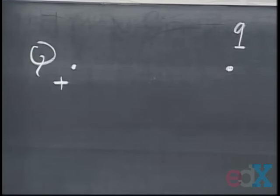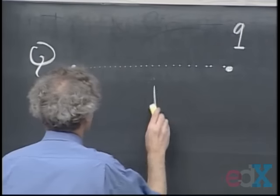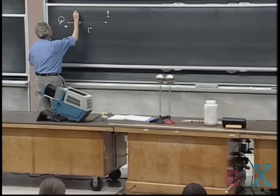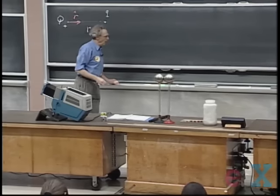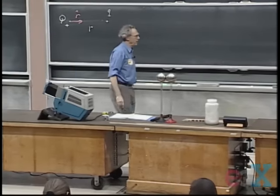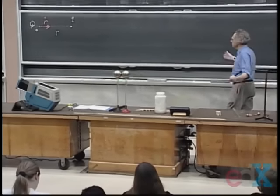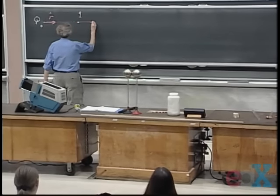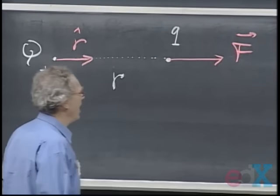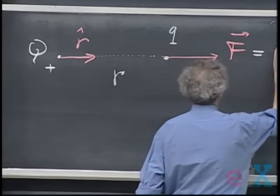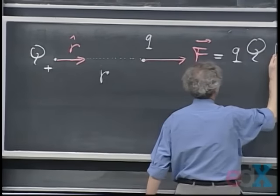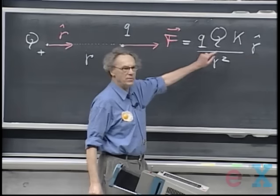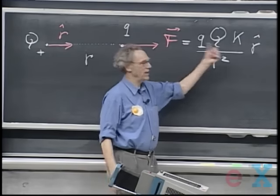I think of little Q as my test charge. There's a separation R between the two, and the unit vector from capital Q to little Q is this vector. If the two charges are both positive, they would repel each other; if little Q is negative, they would attract each other. Let this force be F. Last time we introduced Coulomb's law: that force equals little Q times capital Q times Coulomb's constant divided by R squared, in the direction of r-hat. If the two have the same sign, it's in this direction; if they have opposite sign, it's in the other direction.